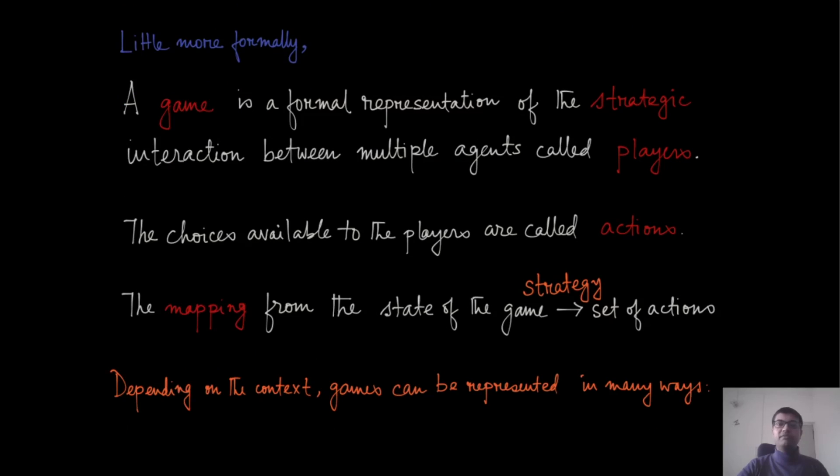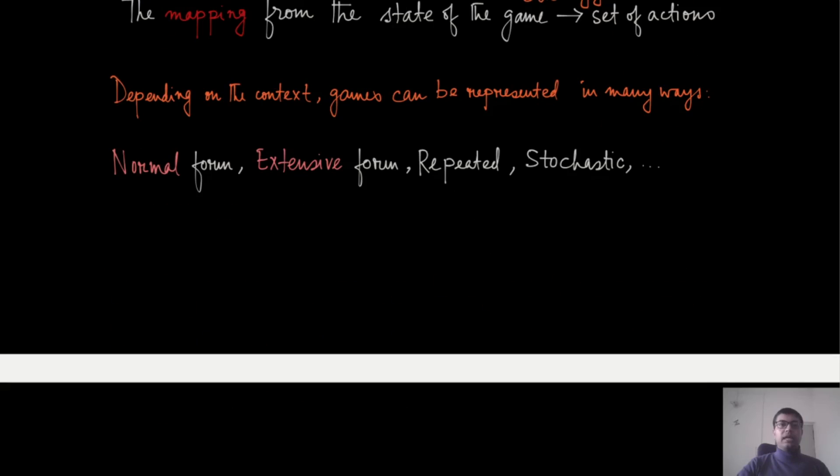Formally speaking, the game as we represented in this matrix is a formal representation of the strategic interaction between multiple agents, which we call players. The choices that are available to these players are called their actions, and the mapping from the state of the game to the set of actions is called the strategy. We'll make these definitions much more formal later. The things that are shown in red are keywords which will be used multiple times in this course.